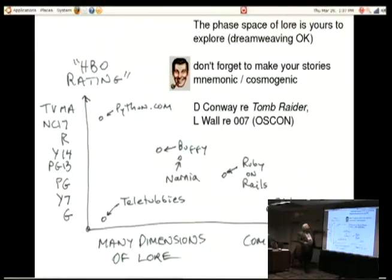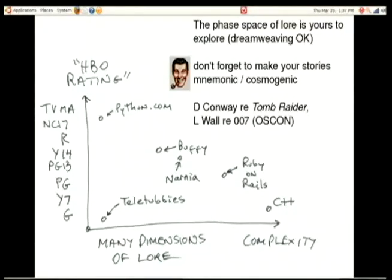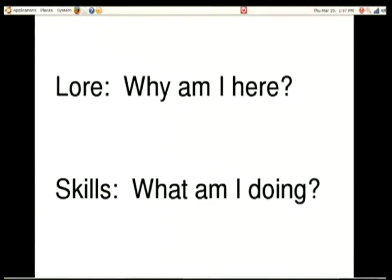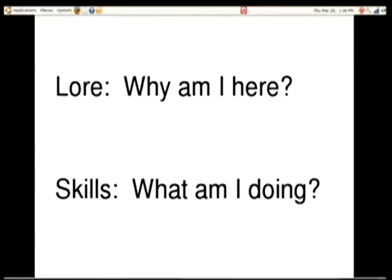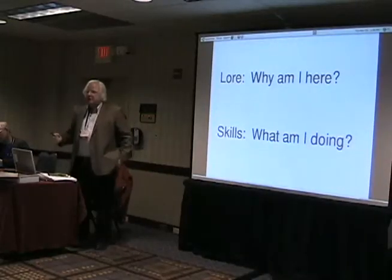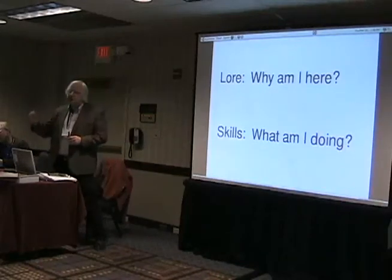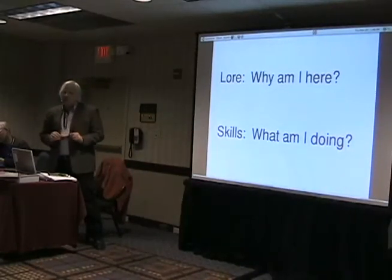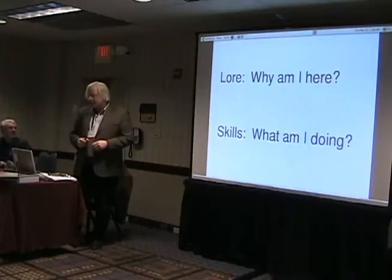Taking the lore axis and splitting it out into two — all lore now. When you're telling a story, you've got your complexity axis, and another axis I would call spiciness. I use the HBO rating system here. When geeks give talks, we're generally being very complex but not doing much that's R-rated or above. Lore is why am I here, and skills is what am I doing. In a typical math class there's a lot of skills but way too little lore. As we use FOSS and Python to take over the math curriculum, we're going to have a lot more lore than before.